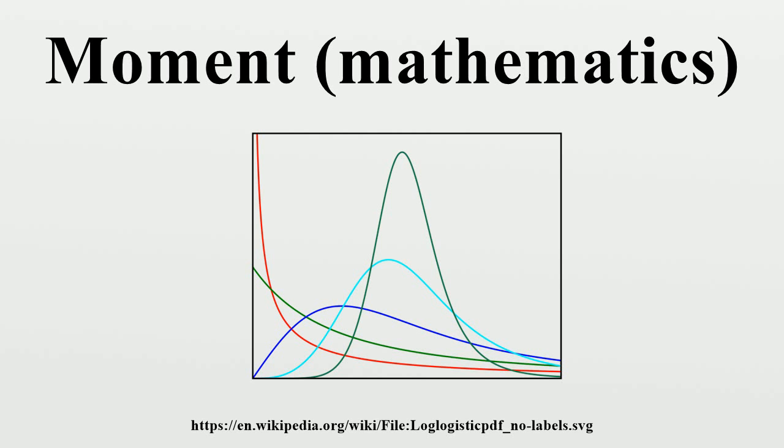For an electric signal, the first moment is its DC level, and the second moment is proportional to its average power. Skewness.